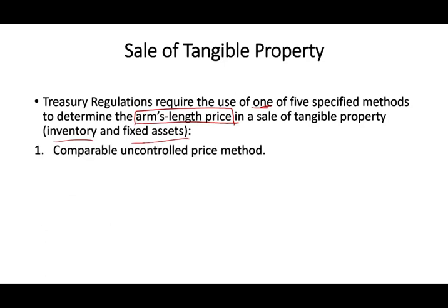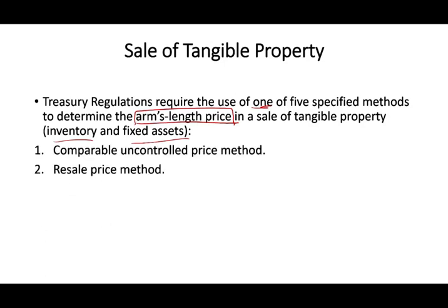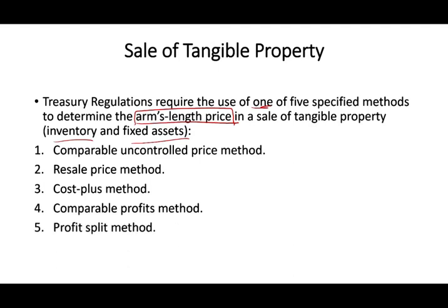The five methods are: comparable uncontrolled price method, resale price method, cost plus method, comparable profit methods, and profit split method. In this session I'm going to be covering method one and method two. In the next session I will cover the remaining three.